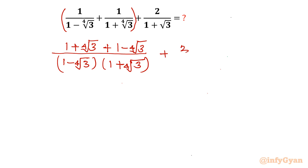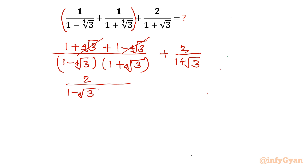And this remaining term stays as it is: 2 over 1 plus square root of 3. After cancelling the 4th root of 3 terms, what is left is 2 divided by the quantity 1 minus 4th root of 3 times 1 plus 4th root of 3, plus 2 over 1 plus square root of 3.